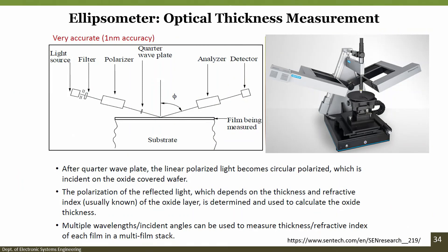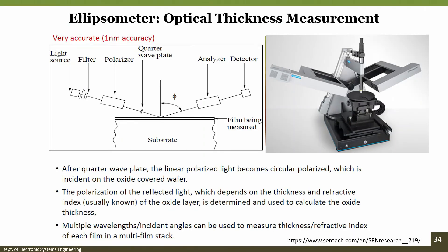Another technique is ellipsometry, which performs optical thickness measurement for transparent films. It is very accurate — about 1 nanometer accuracy. There is a light source, detector, filter, polarizer, and quarter-wave plate. The advantage is that it is a non-destructive method to measure the thickness of silicon dioxide. Next we will cover lithography — photolithography will be covered in the next lecture. Review these slides on silicon dioxide growth techniques and characterization methods. See you in the next class.